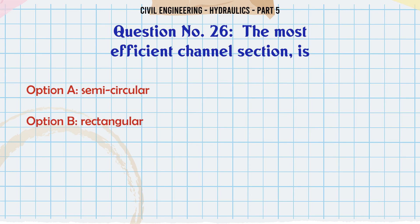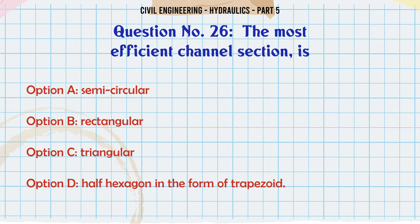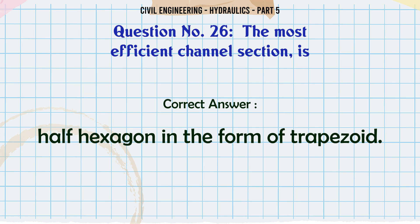The most efficient channel section is: A. semicircular, B. rectangular, C. triangular, D. half hexagon in the form of trapezoid. The correct answer is half hexagon in the form of trapezoid.